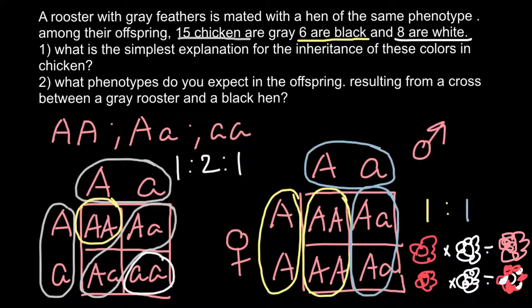So this is the difference between incomplete dominance and co-dominance. Here both genes are expressed simultaneously, and here red is incompletely dominant over the white, and the color would be intermediate.